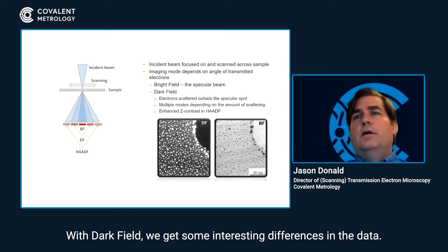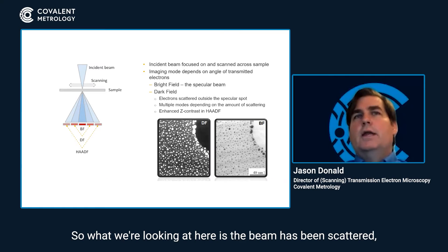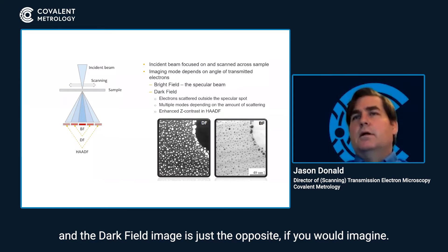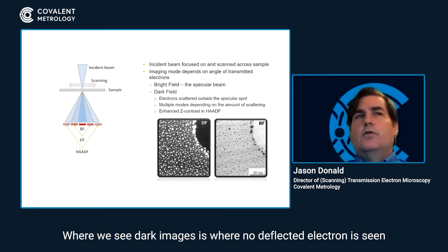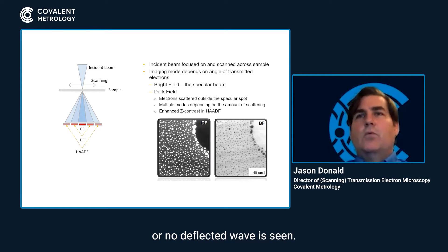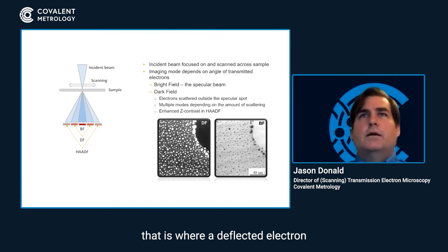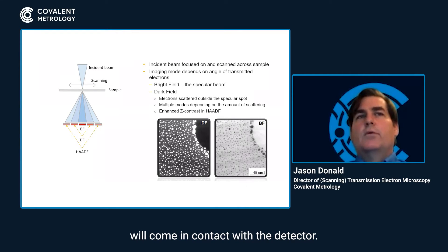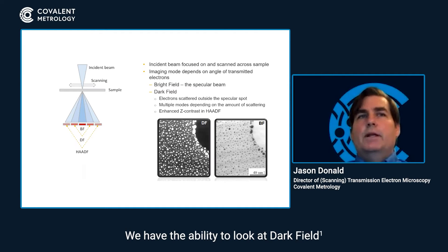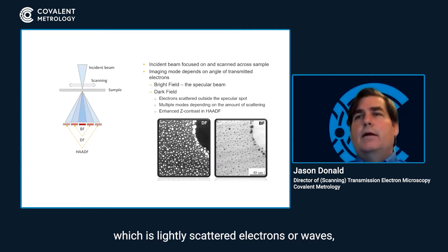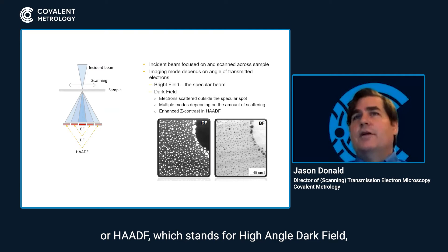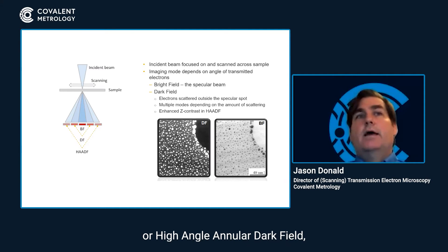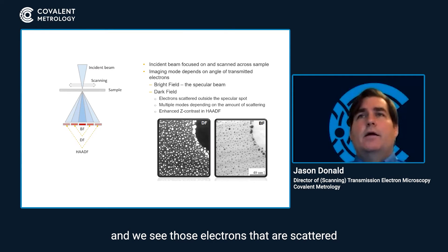With dark field, we get some interesting differences in the data. The beam has been scattered, and the dark field image is just the opposite, as you would imagine. Where we see dark images is where no deflected electron or wave is seen, and where we see bright images is where a deflected electron comes in contact with the detector. We have the ability to look at dark field one, which is lightly scattered electrons or waves, or HAADF, which stands for high angular annular dark field, where we see electrons scattered at a much higher angle.